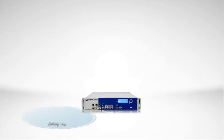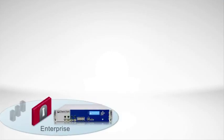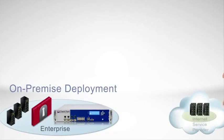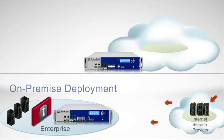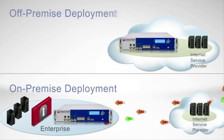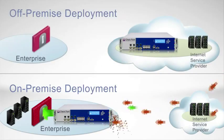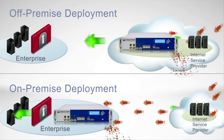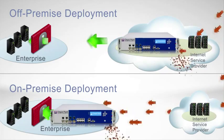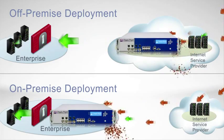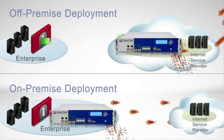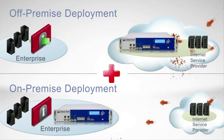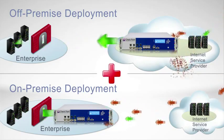Checkpoint DDoS Protector offers flexible deployment options, including on-premise and out-of-band options. Leveraging the strong benefits of the on-premise presence, the solution can be deployed as an additional layer of protection along with an off-premises solution, thus leveraging the benefits of an always-on behavioral analysis engine.